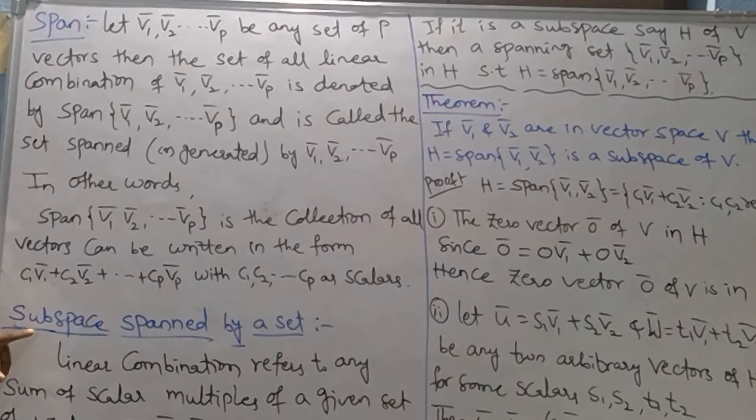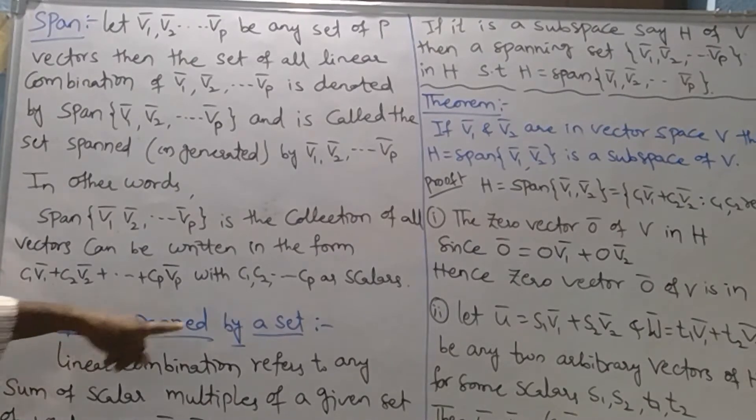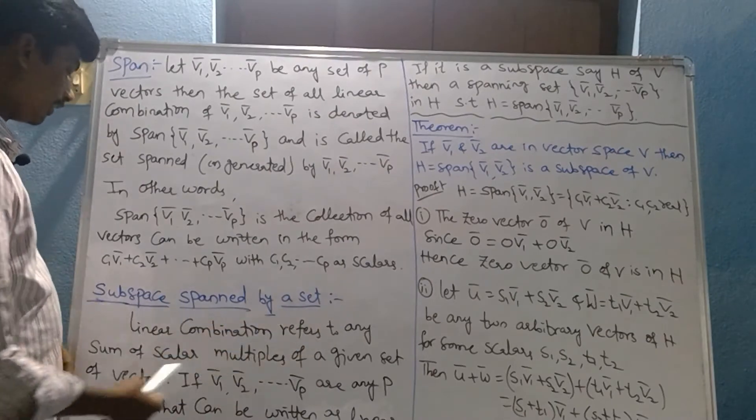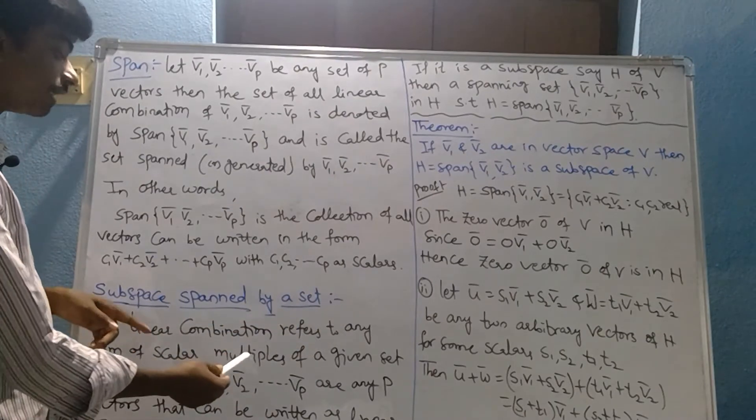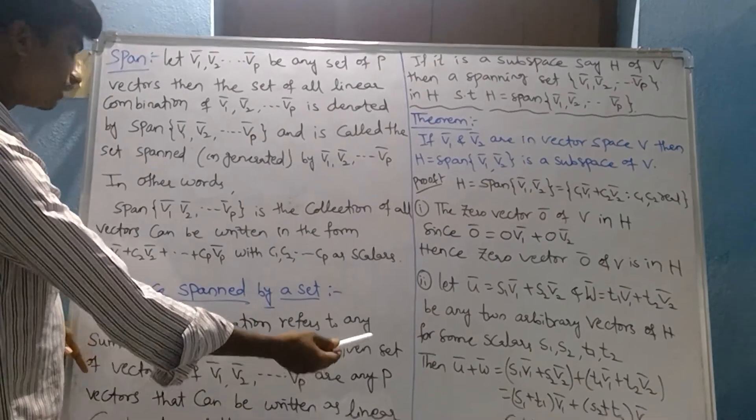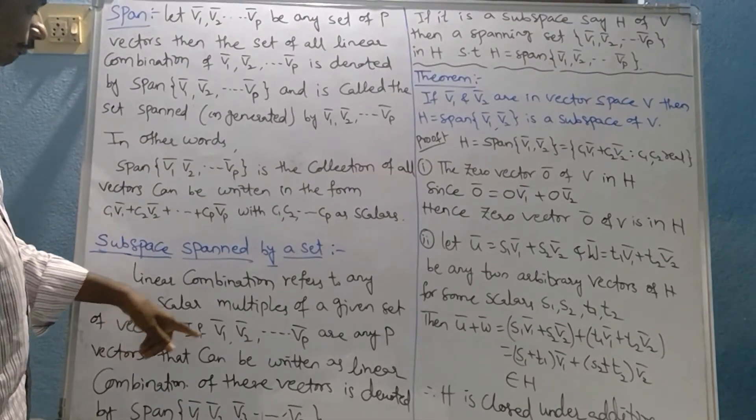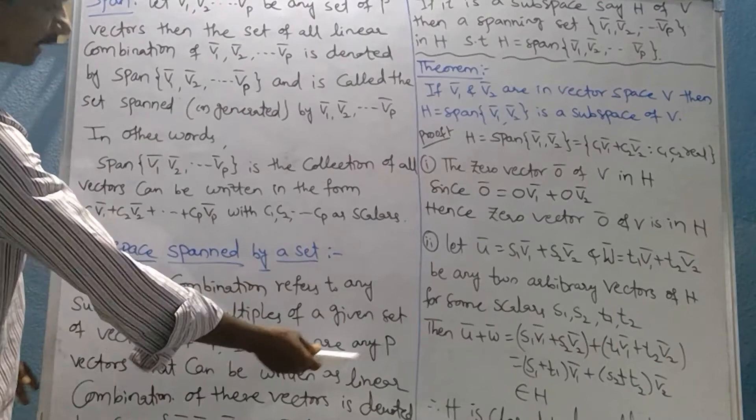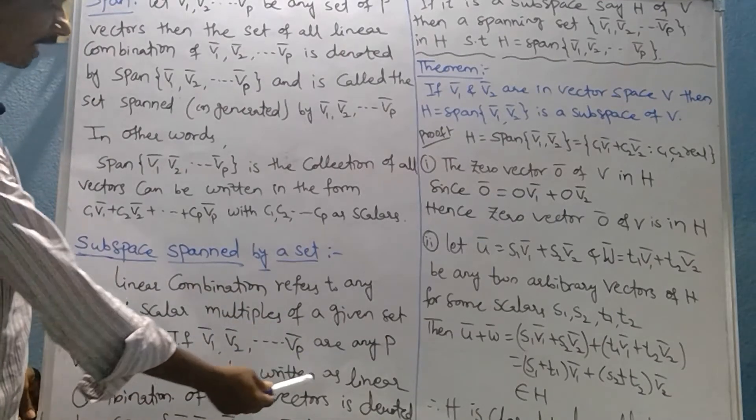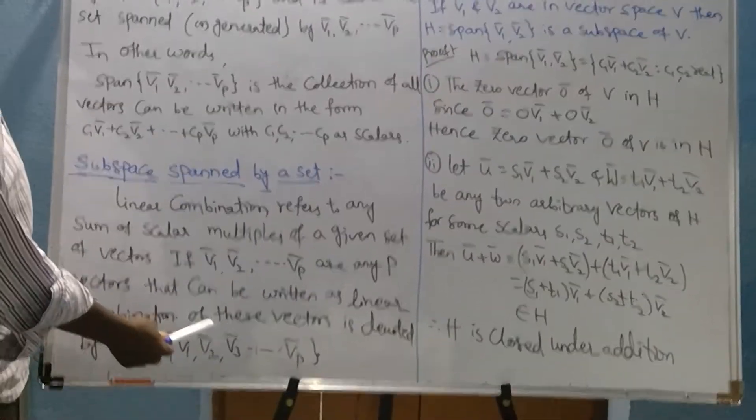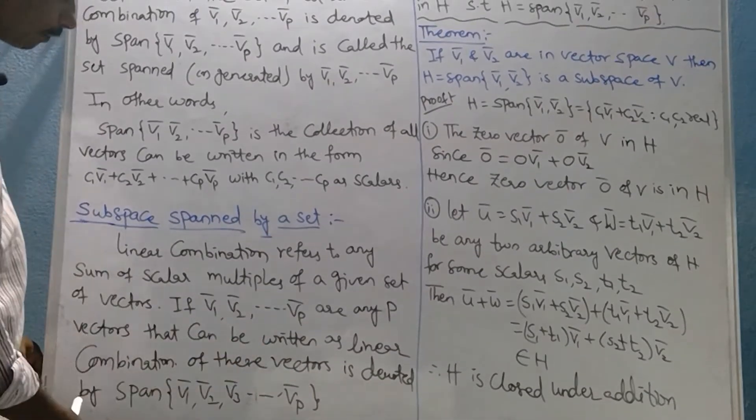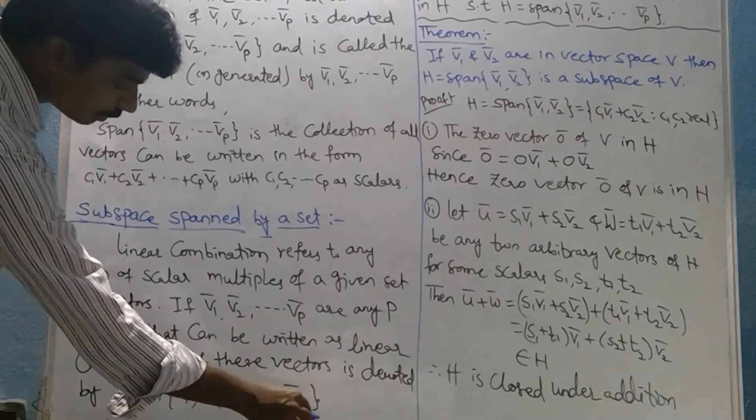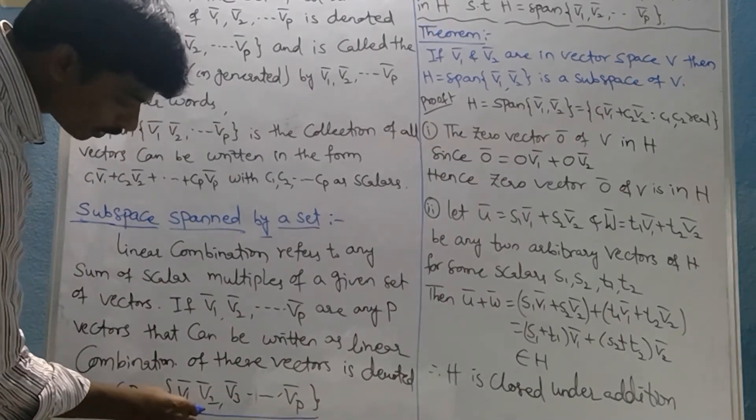Now next, let's go to the subspace spanned by Vp bar. Linear combination refers to any sum of scalars multiplied by a given set of vectors. If V1 bar, V2 bar, so on Vp bar are any P vectors that can be written as linear combinations of these vectors, it is denoted by span of V1 bar, V2 bar, V3 bar, so on Vp bar.